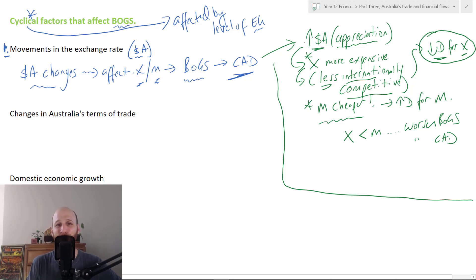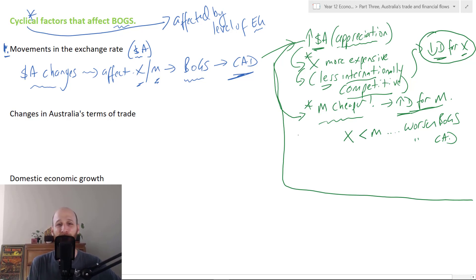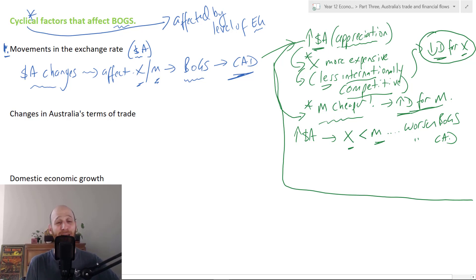At the same time, when you've got a stronger Australian dollar, Australian consumers are going to find that imports are much cheaper, and that will mean there is more demand for imports. If we have a stronger Australian dollar, we're likely going to get a situation where the volume of imports exceeds the volume of exports. This is going to worsen the balance of goods and services and will then worsen the current account deficit.